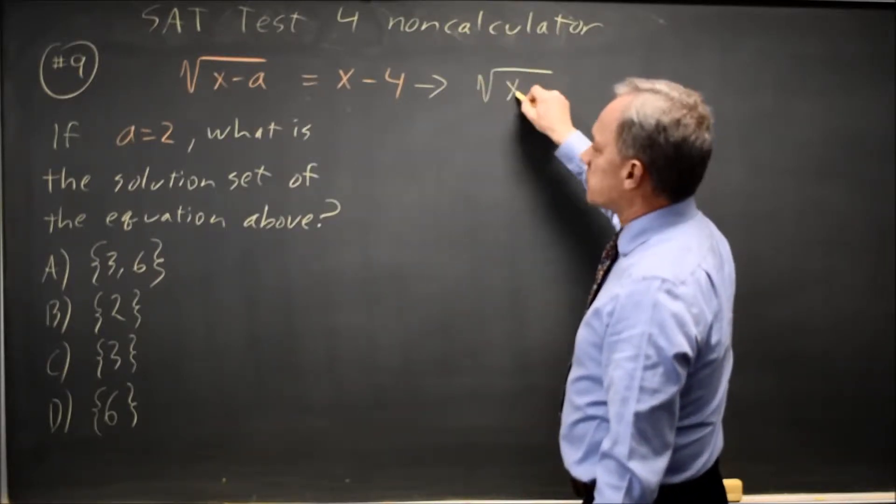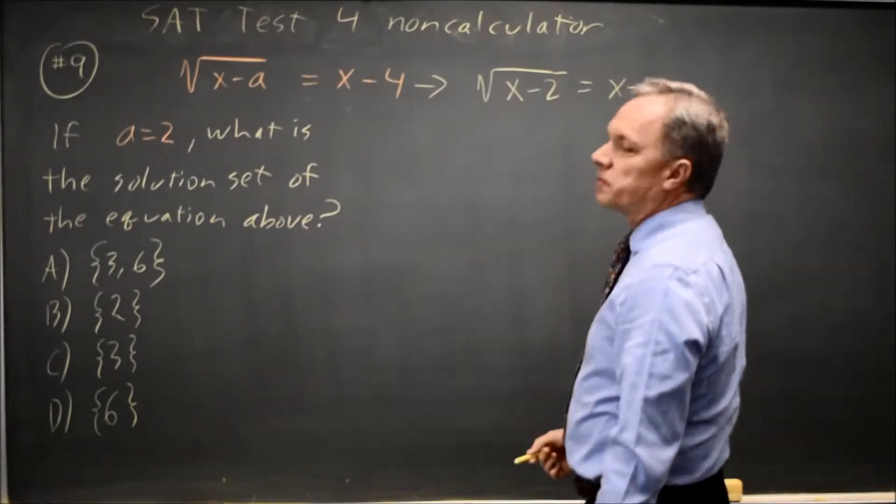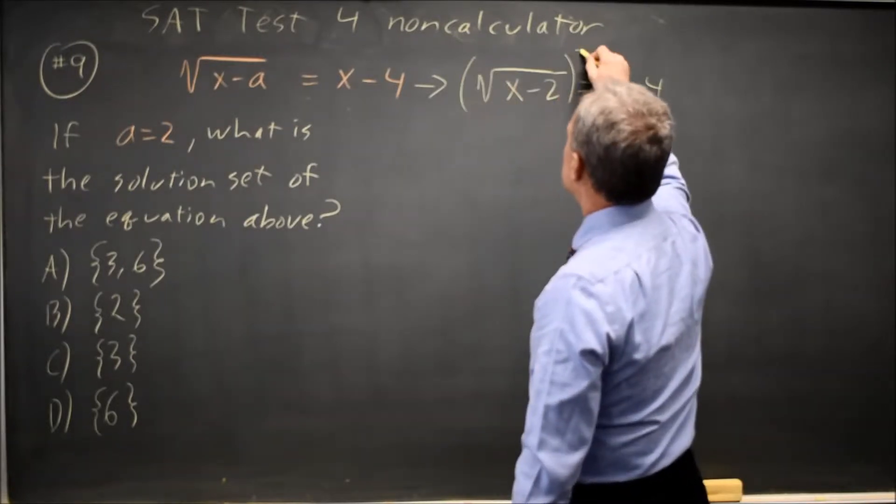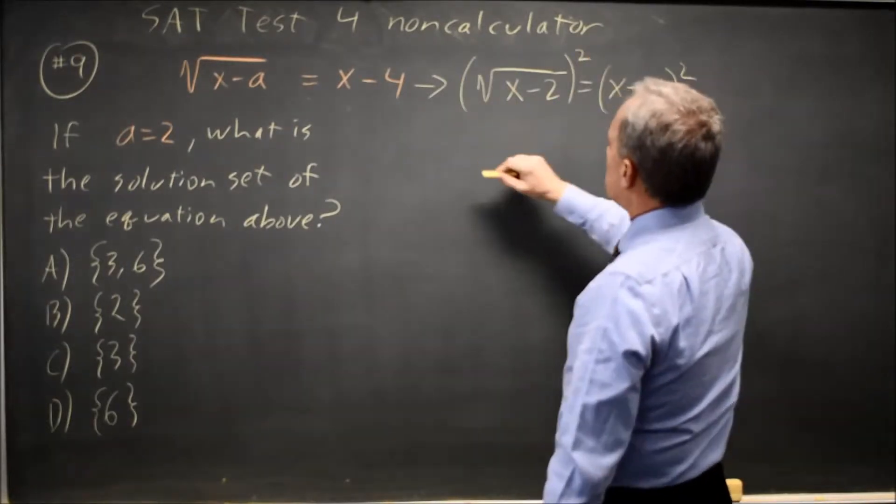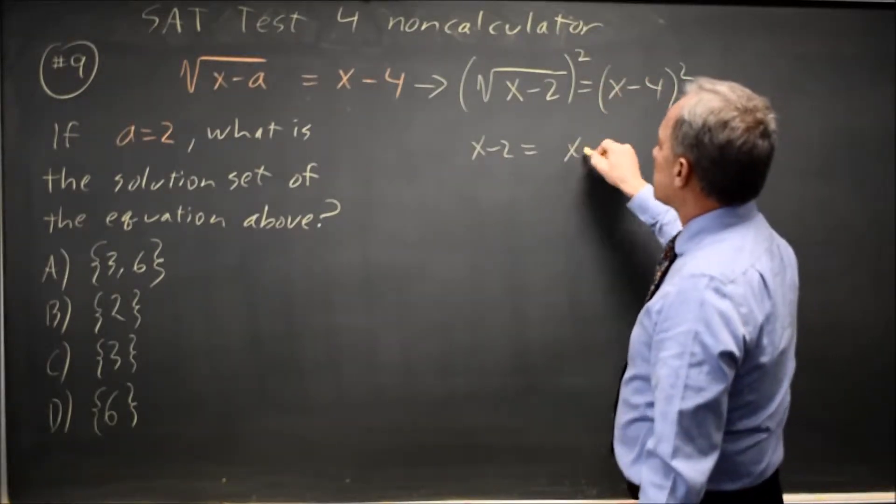Square root of x minus a is square root of x minus 2 equals x minus 4. To do the algebra, I'm going to square both sides. That gives me x minus 2 equals x minus 4, x minus 4.